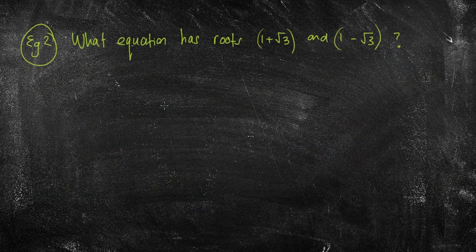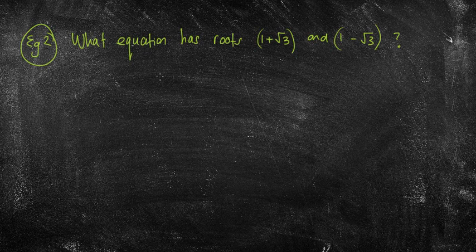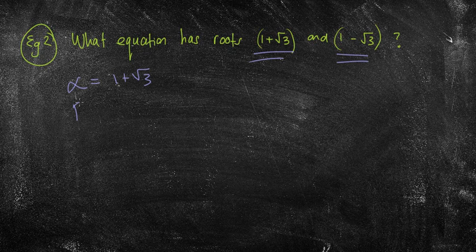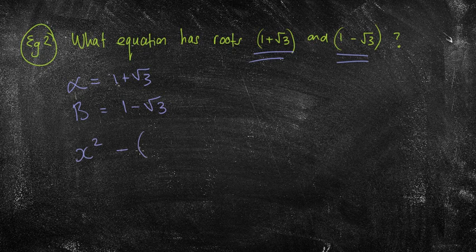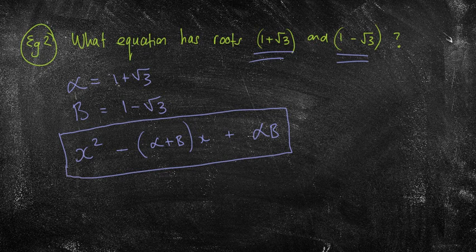The next question: what equation has roots 1 plus root 3 and 1 minus root 3? This is a backwards question — we're being told what alpha and beta are. We know that any quadratic equation will be in the form x squared minus (alpha plus beta)x plus alpha beta equals 0.